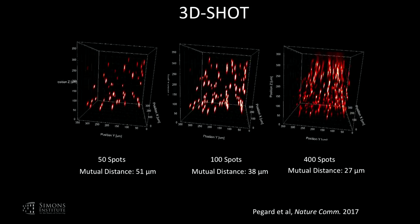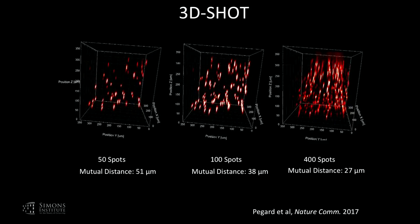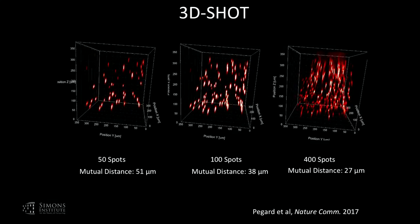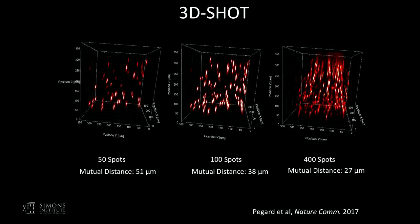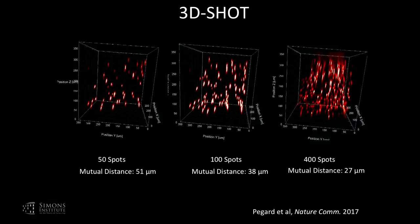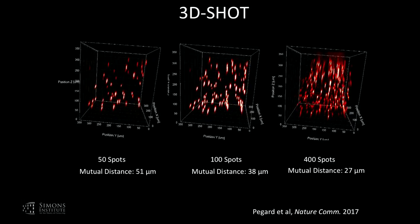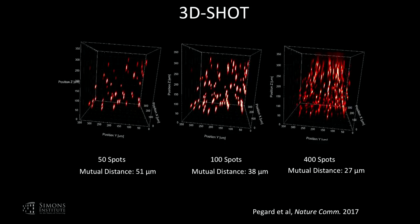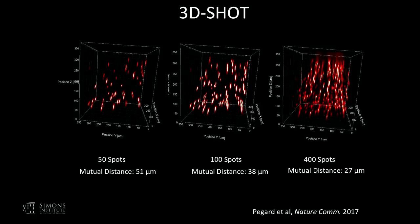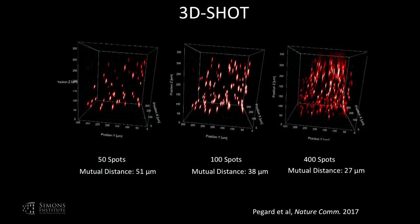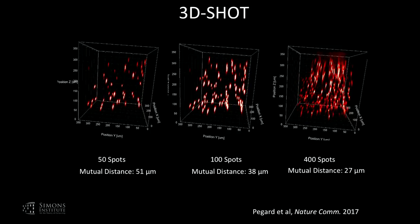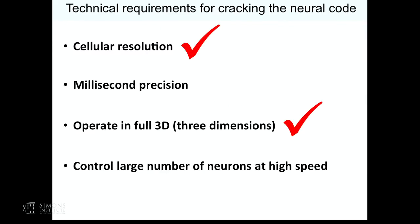We came up with a tool we call 3D-SHOT — three-dimensional scanless holographic optogenetics with temporal focusing. The key idea is that a single femtosecond pulse can be reshaped into a three-dimensional pattern of light where each blob is designed to be about the size of one pyramidal cell in layer 2-3 of a mouse cortex. You can place up to hundreds of spots anywhere you want in 3D, allowing you to pass light onto neurons of interest defined by you or by the data collected from this animal.